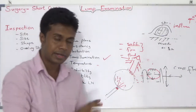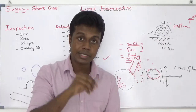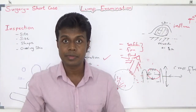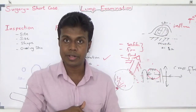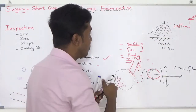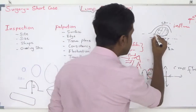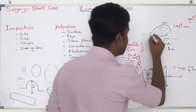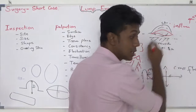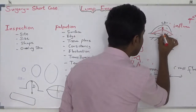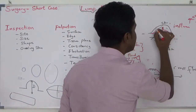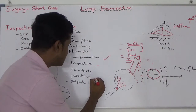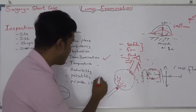Next: pulsatility - whether the lump is pulsating. Some vascular tumors, if you carefully examine, you can feel pulsation. With systole and diastole, the blood supply to the lump changes, causing a pulsatile action. So pulsatility can be felt with a vascular lump.